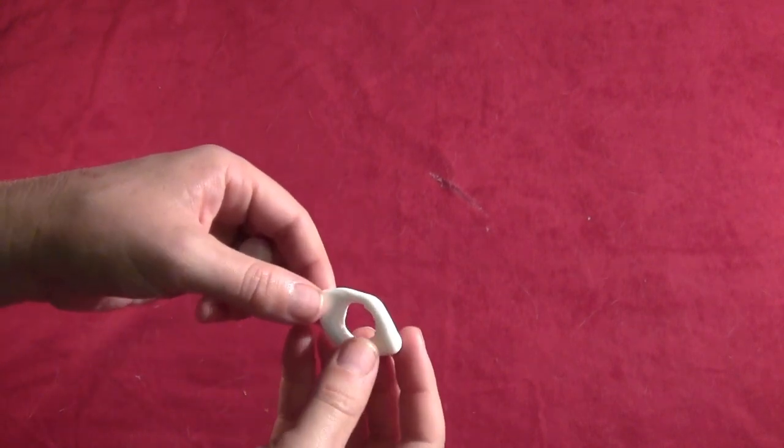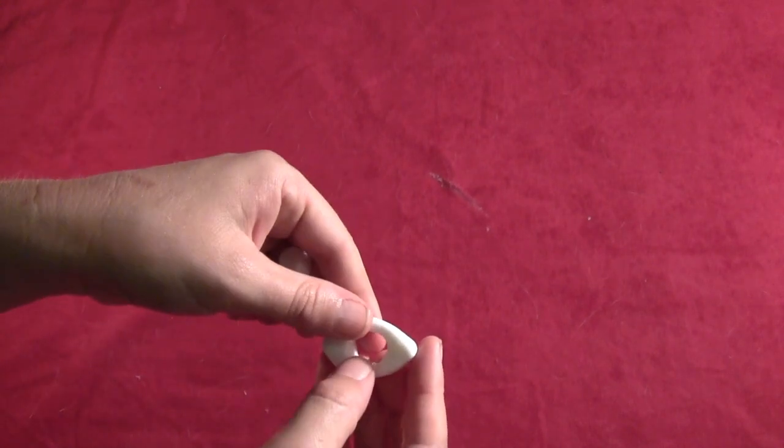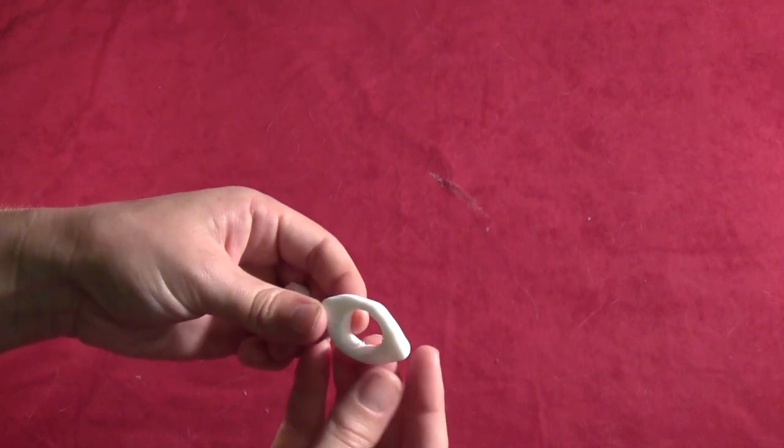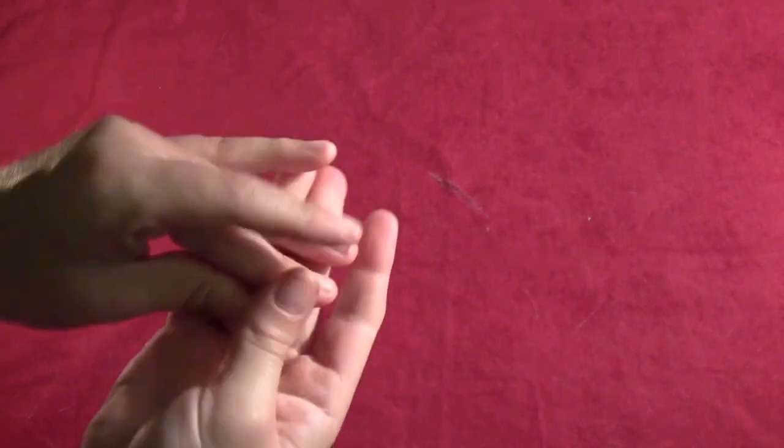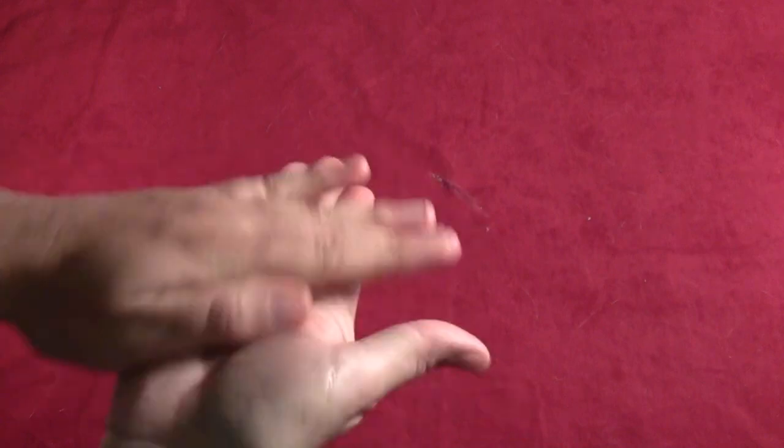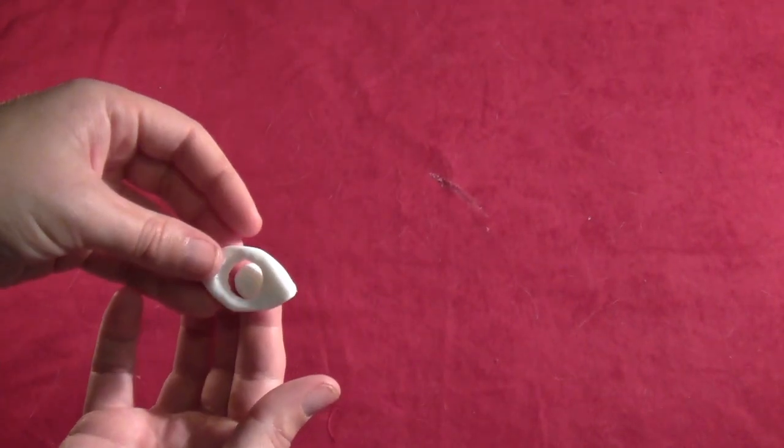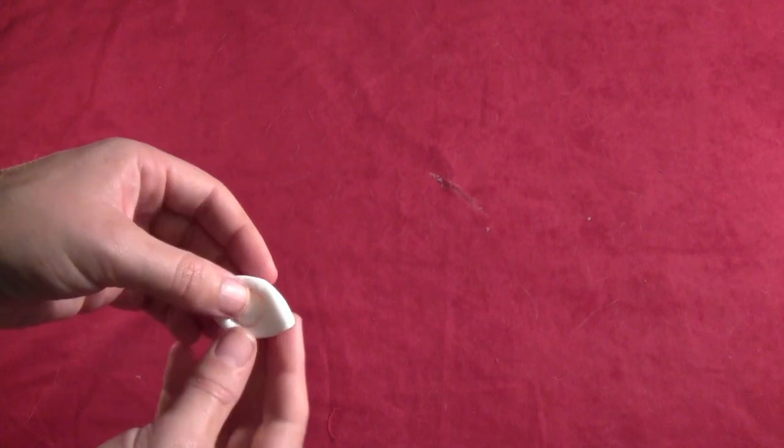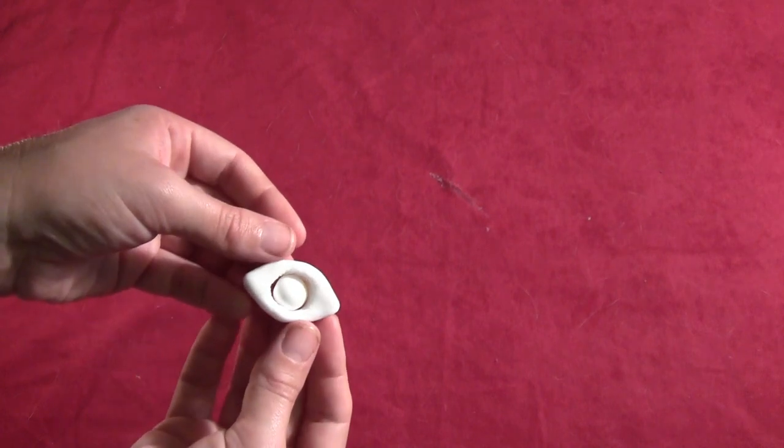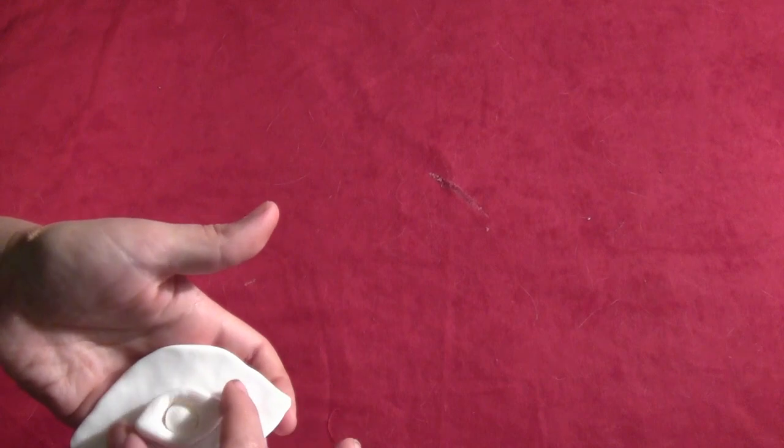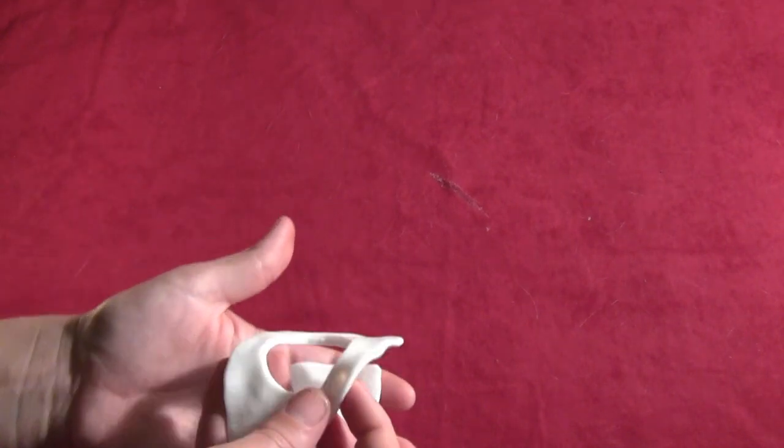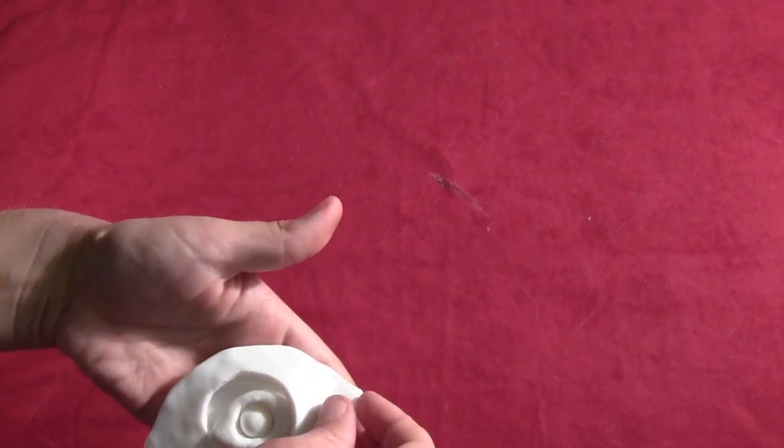And then you want to form a little eyeball shape that will fit right inside the hole you just made. So they should fit together like that. And so then everything should fit together just like that.